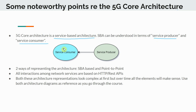What that really means is you have different network functions — network function 1 and network function 2, as an example. Network function 2 is offering certain services, which is why it's called a producer, and then network function 1 is a consumer of that service, and therefore it is referred to as the consumer. Every network function provides certain services, making it a service producer, and also relies on services from other producers, making it a service consumer.